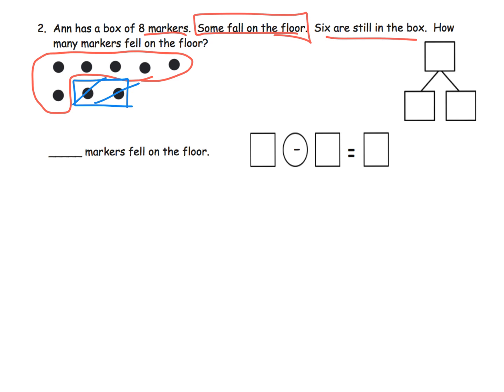So what would our number bond over here look like? Well, we know 8 is our whole, and we know that 6 are still in the box. And what fell on the floor? We know it's 2, so there is our number bond. And we know how many markers fell on the floor. Well, we know already it's 2. What would our number sentence be? Our number sentence would be 8 minus 6 equals 2.